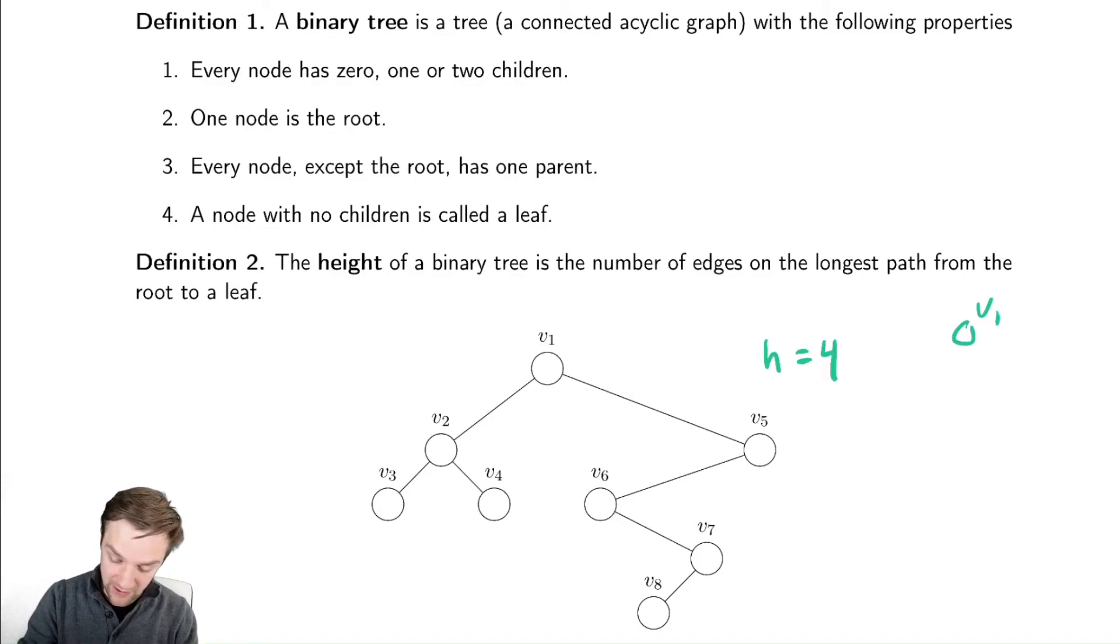So sometimes you'll say that as a height of 1, and you'll count the number of nodes in the path along this path here, and that's 1, 2, 3, 4, 5. So there are different notions for height. We're using the more mathematically inclined definition here.